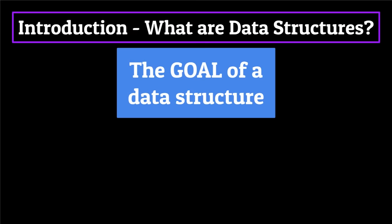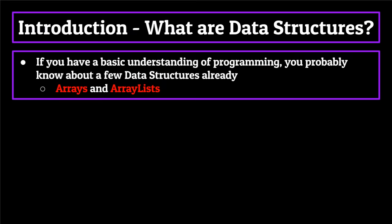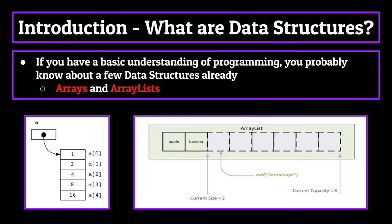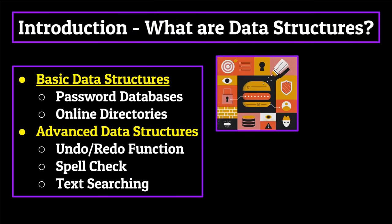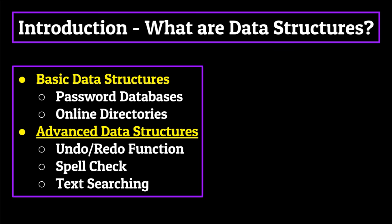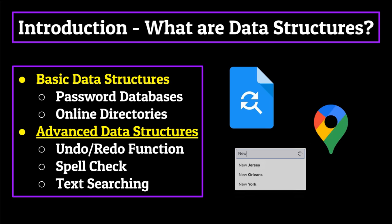Each of the data structures I'll be talking about are designed for the sole purpose of storing information and allowing the end user to access and manipulate that information in an efficient, effective way, but each one differs in the manner that they accomplish this. If you have a basic understanding of programming, you probably know about a few different data structures already, such as the array and the array list, also known as the list in Python. But if you're going to be pursuing a career in computer science, just knowing these two is definitely not going to cut it. More advanced data structures are being put to use all around you — the undo/redo button in Google Docs, Google Maps on your phone, even the autocomplete feature through your text messages all require the use of more advanced data structures, which makes them extremely useful to learn and comprehend.